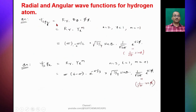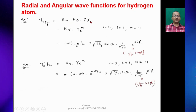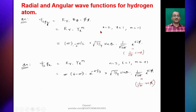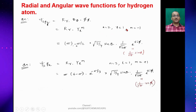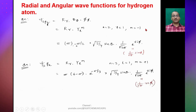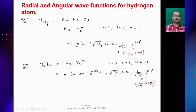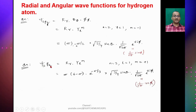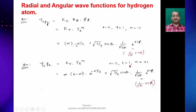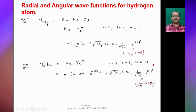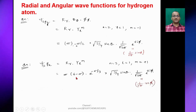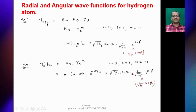The total wave function ψ_nlm = R(r) · Θ(θ) · Φ(φ) = R(r) · Y_lm. For ψ_3pₓ, we have n = 3, l = 1, m = +1; substituting these values gives the corresponding solution for the 3pₓ orbital.